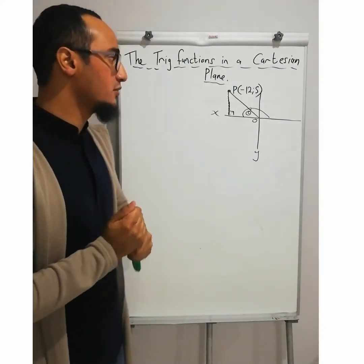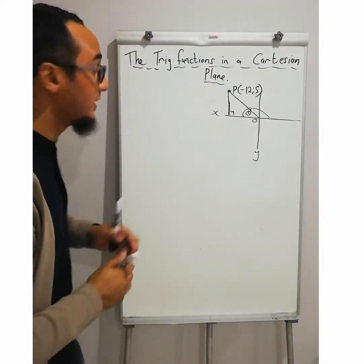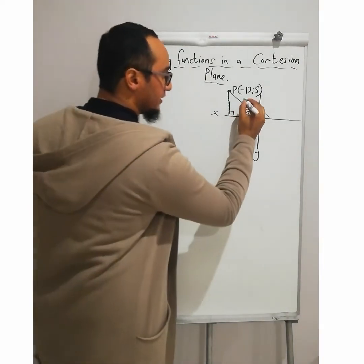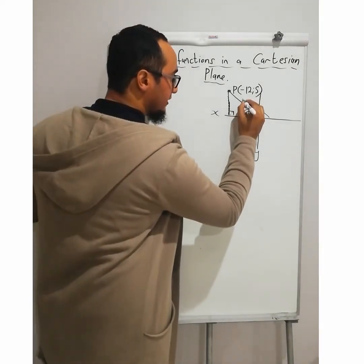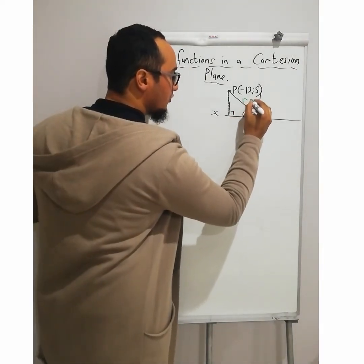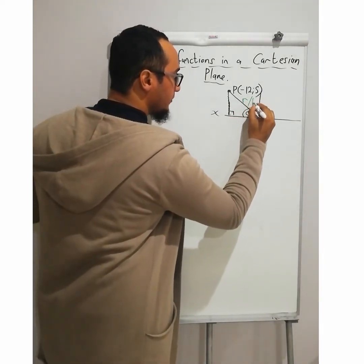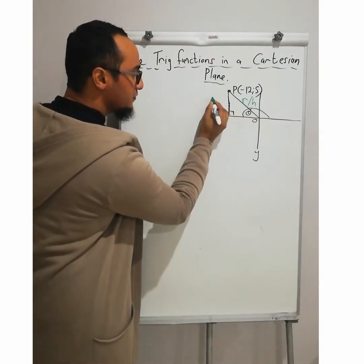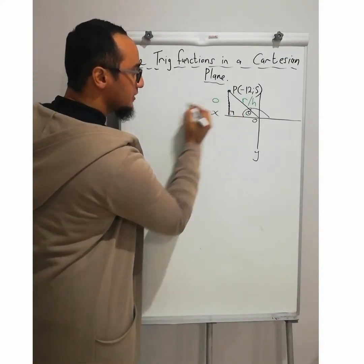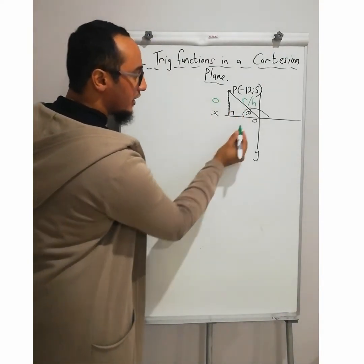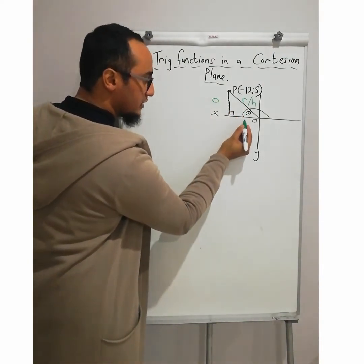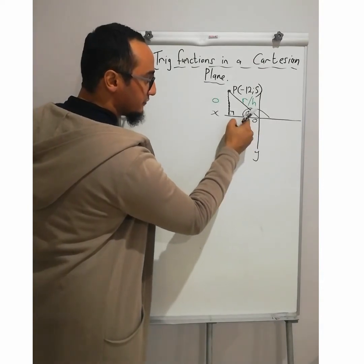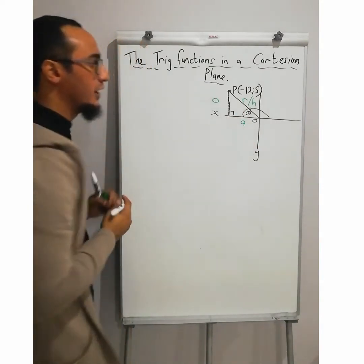So let's focus on our dimensions. Over here would be your radius r, or hypotenuse. From this angle, this would be your opposite, and over here this would be your adjacent from that particular angle.